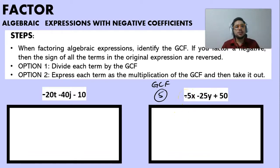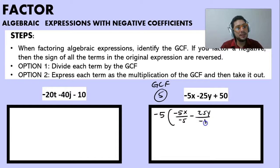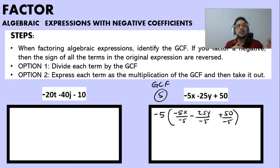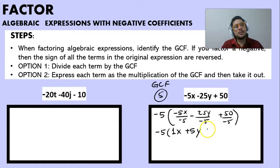Since we are studying expressions with negative coefficients, we are going to factor out minus 5. We have: minus 5X divided by minus 5, minus 25Y divided by minus 5, and plus 50 divided by minus 5. Remember, factoring with a negative changes the sign of all terms. The first term was negative, the second negative, and the third positive — so they become: negative 5 divided by negative 5 is plus 1X, minus 25 divided by minus 5 is plus 5Y, and plus 50 divided by minus 5 is minus 10.